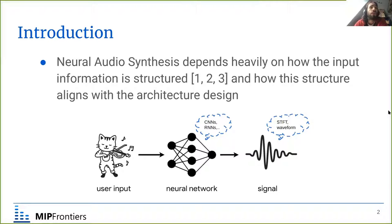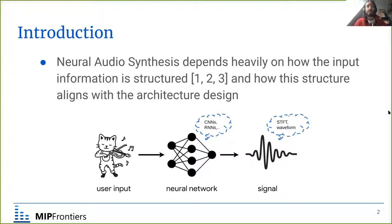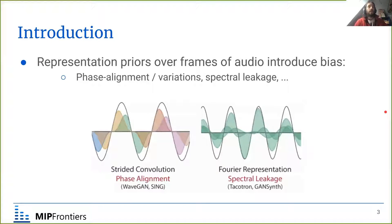From the architecture side, our neural network toolbox provides tools that extract specific types of features. CNNs look for local patterns, while LSTMs and RNNs enable learning sequential dependencies, but these blocks introduce bias. From the audio representation side, common representations include raw audio waveform or magnitude and phase of the short-time Fourier transform. Issues like waveform alignment and spectral leakage cause the model to learn unnecessarily many filters, which is clearly inefficient.